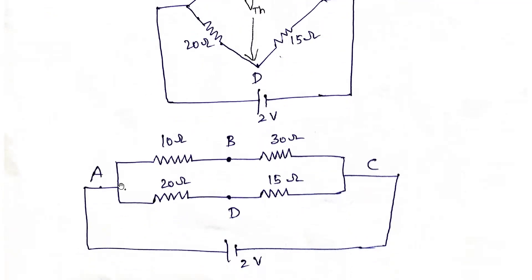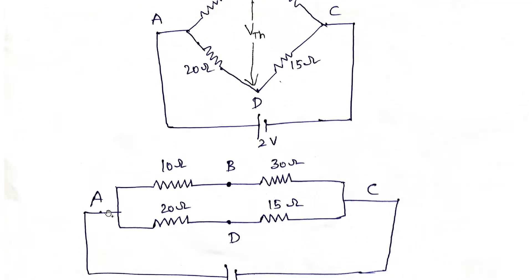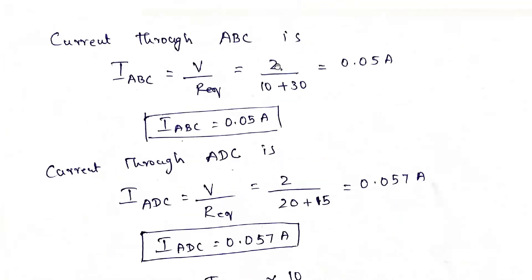We need to find out the current through ABC. IABC is equal to V divided by R equivalent. V is 2 volts divided by R equivalent — 10 ohms and 30 ohms are in series. So 10 plus 30 equals 40 ohms, giving IABC equal to 2 divided by 40, which is 0.05 amperes. That is the current through ABC.